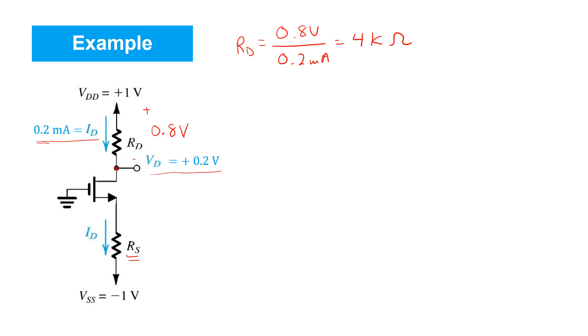Moreover, we know that there's current flowing through it because we're told the drain current is 0.2 milliamps. So we know that the transistor is on. And thanks to the fact that we know the drain voltage, we know that it must be in saturation.